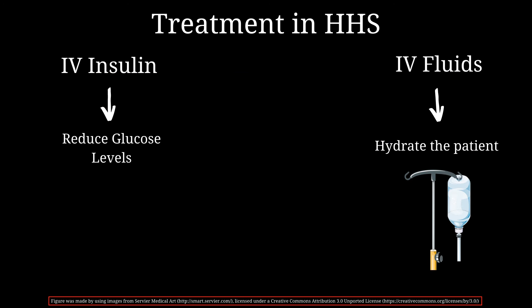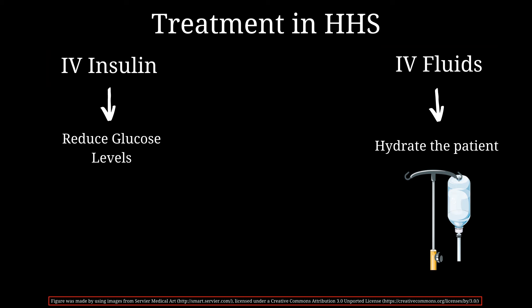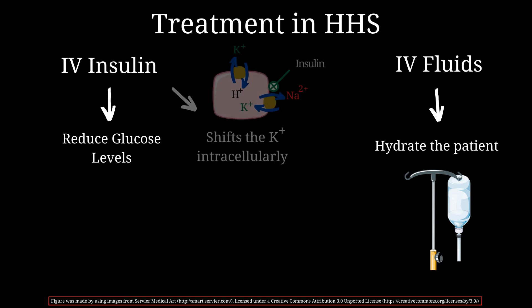When treating a patient with hyperosmolar hyperglycemic state, our goal is to reduce the high glucose levels by administering insulin, and manage the hyperosmolarity by giving IV fluids. However, there is one thing to be careful of when giving insulin to these patients: potassium levels, which although within their normal range, will shift intracellularly when insulin is given.